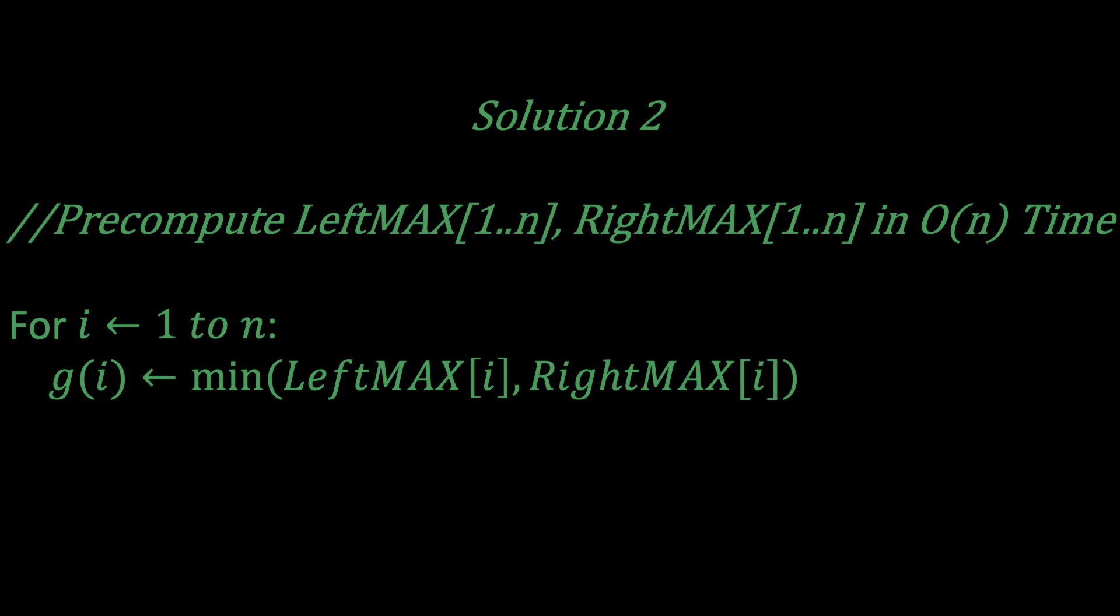Think about the algorithm as this. We will first do some pre-computing on H to calculate two arrays. LeftMAX, which is of size n, and RightMAX, which is of size n. LeftMAX[i] will store the maximum of H[1] to H[i], and RightMAX[i] will store the maximum of H[i] all the way to H[n].